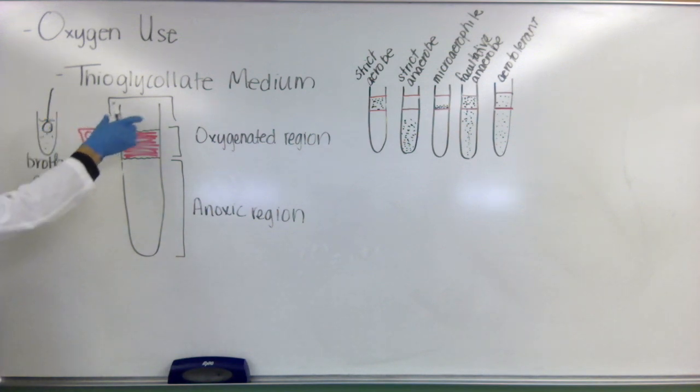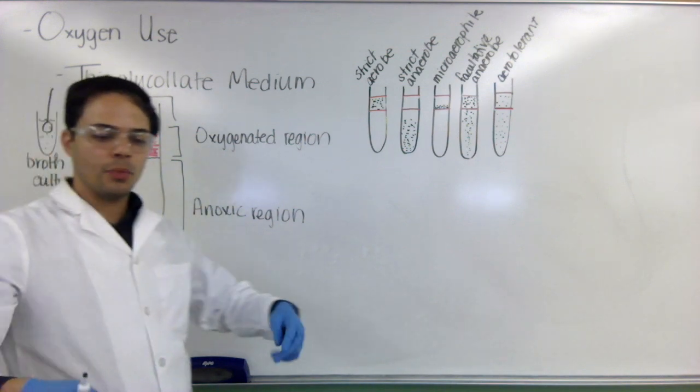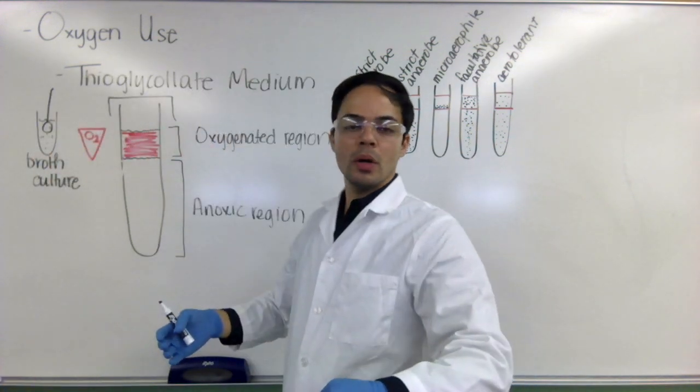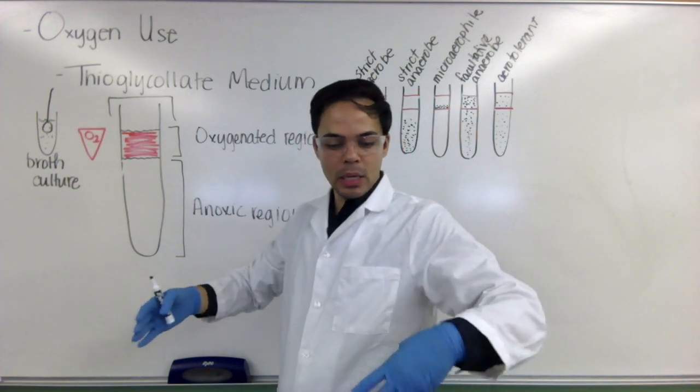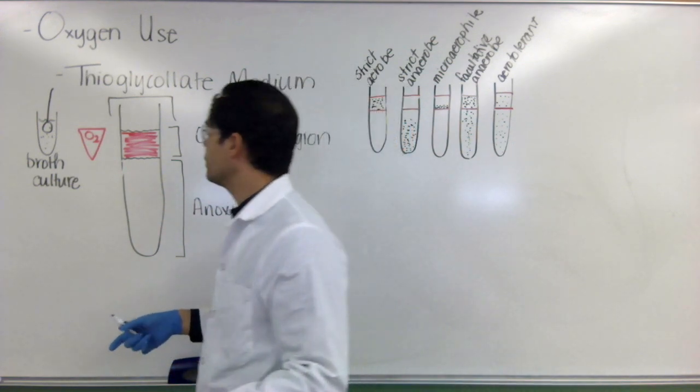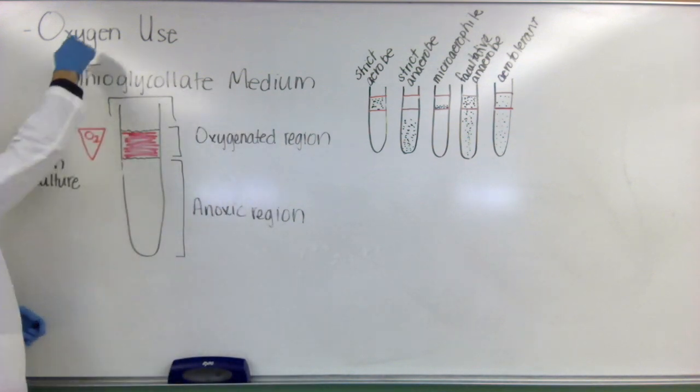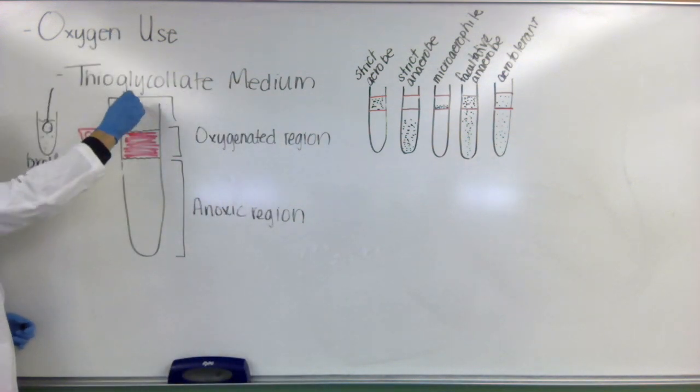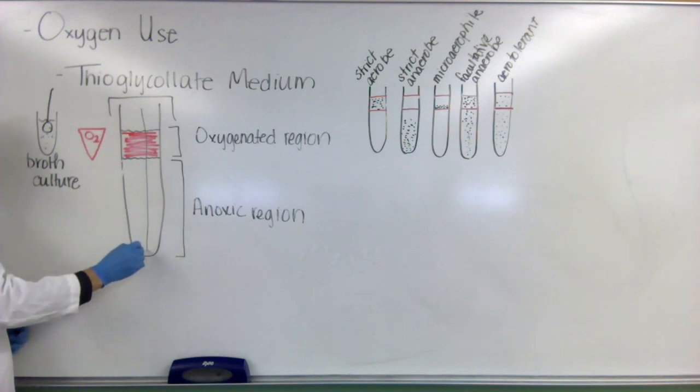And then we're going to take the cap off. Now only take the cap off in the region around your flame that has your semi-sterile area. Then you're going to just dip it straight down. So you dip it all the way to the bottom and then come back up.